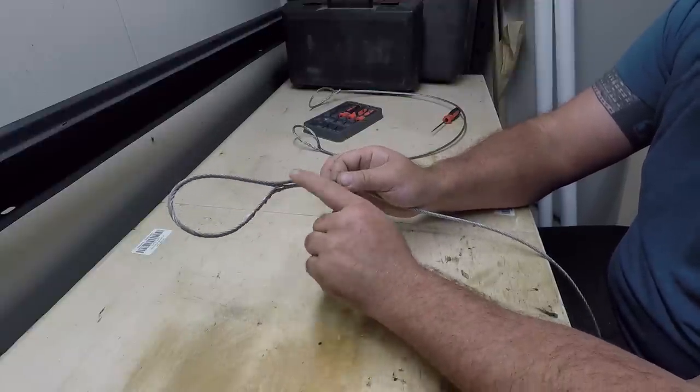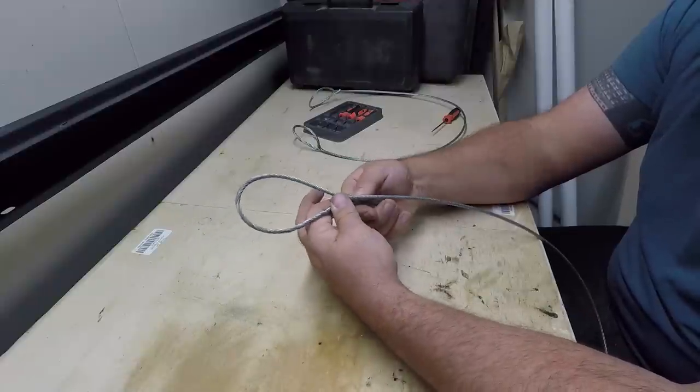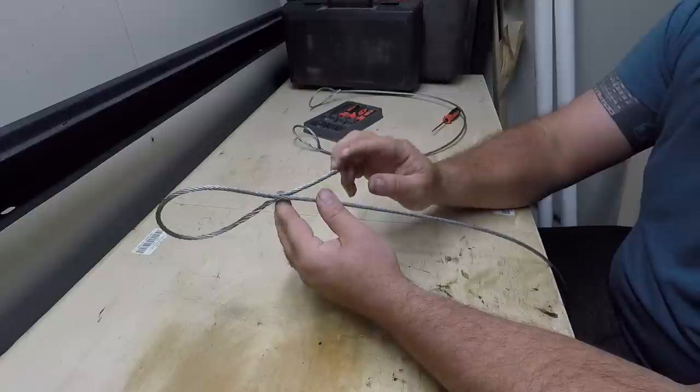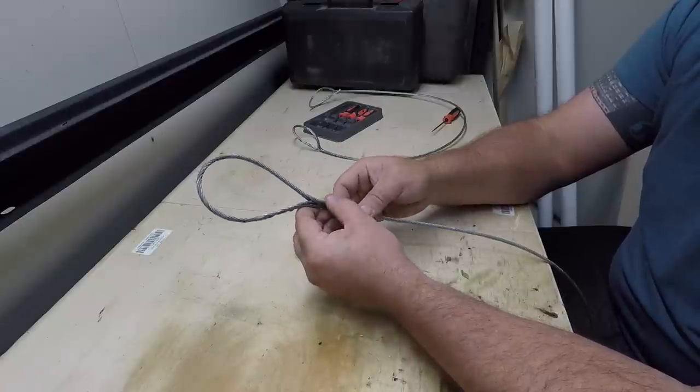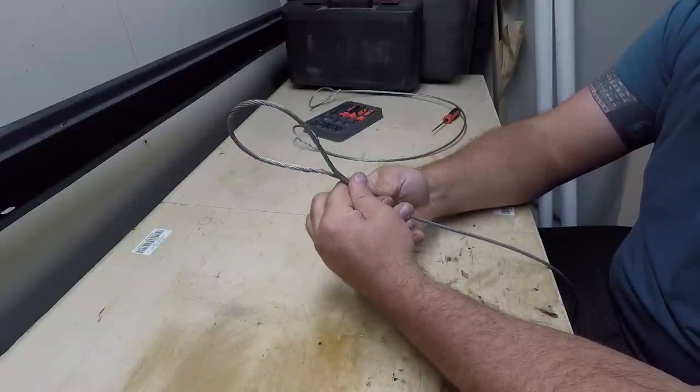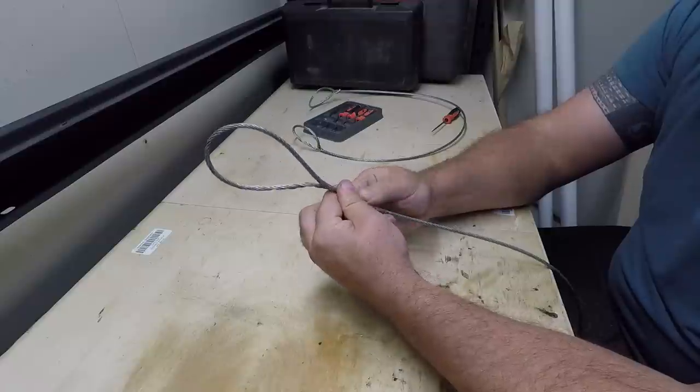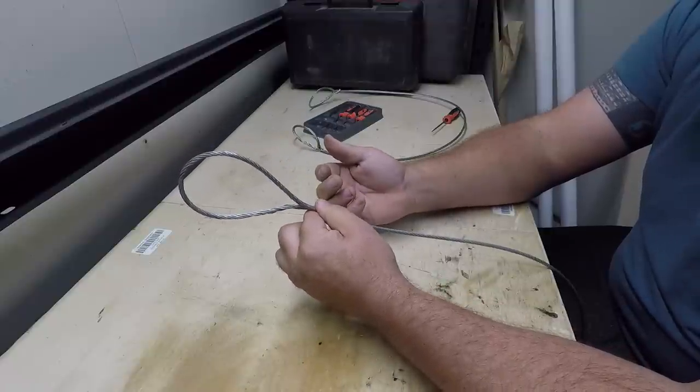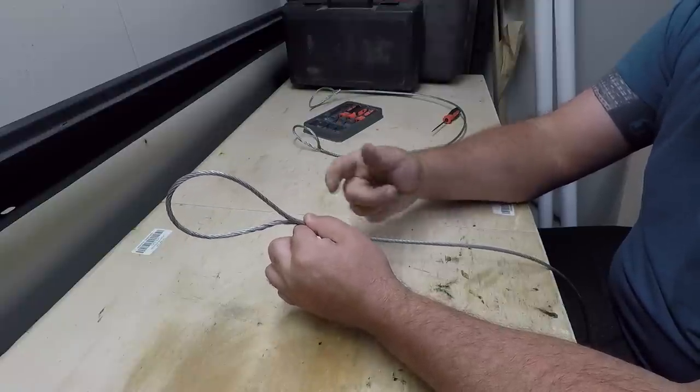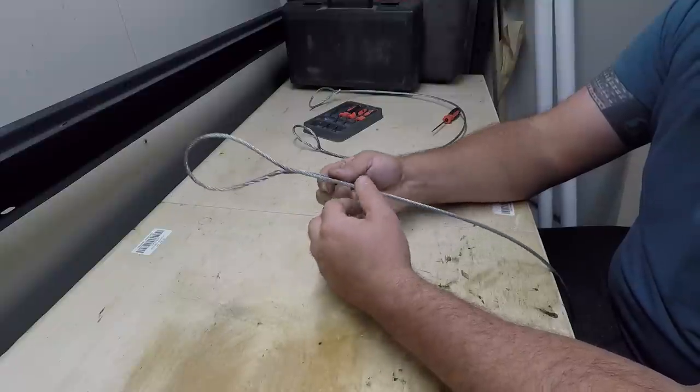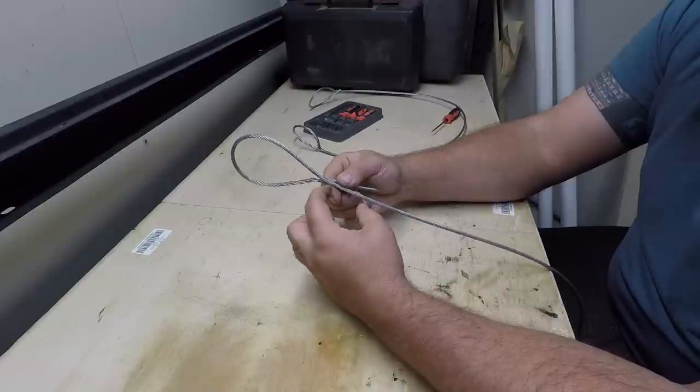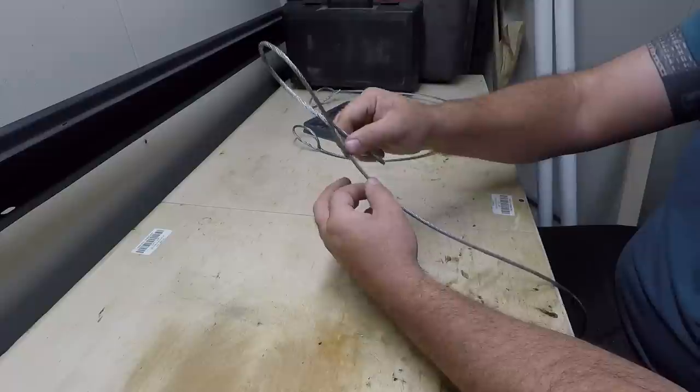You've got the rope coming up, it splits both sides, and then the tail comes back down and is woven together on this backside. If you have a cable clamp, you could clamp it off with a couple cable clamps or even just one, and you have an eye that is 90% as strong as the rope itself. Now when you clamp this, the saddle of the clamp goes on this side of the rope. This is your live side of the rope. This tail gets the U-bolt.